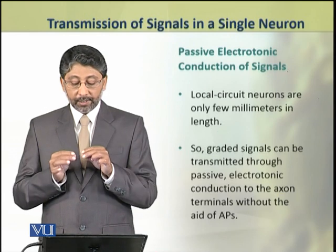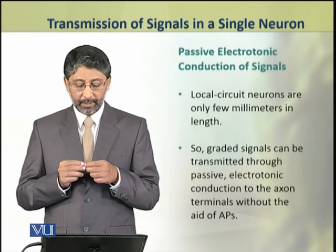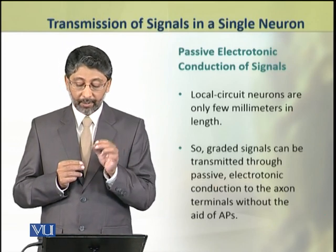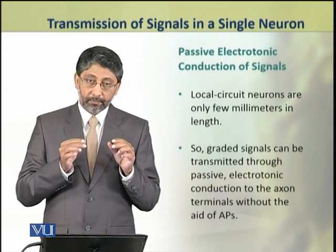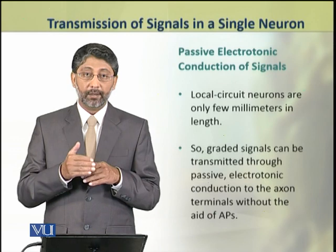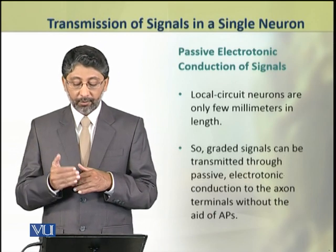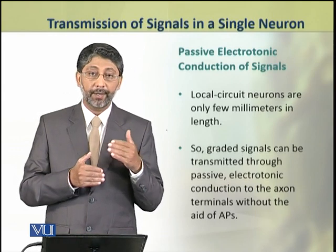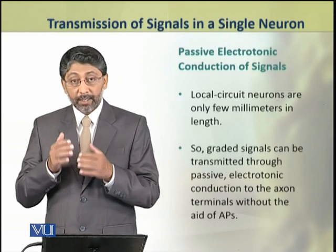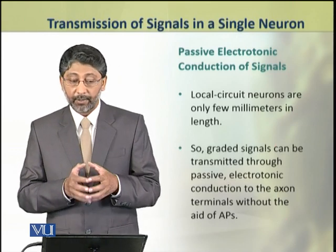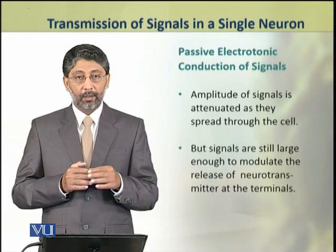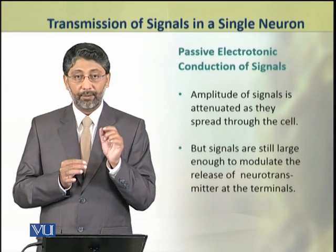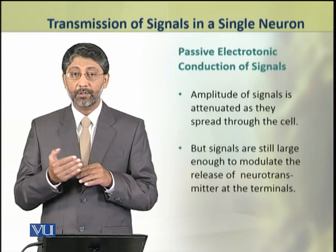These local circuit neurons, which are only a few millimeters in length, can only conduct signals through graded potentials. These graded potentials are transferred in a passive electrotonic way from the axon terminal to the next neuron. They do not take the aid of action potentials. In all this process, the amplitude of the signal is attenuated, and the signal becomes weaker.